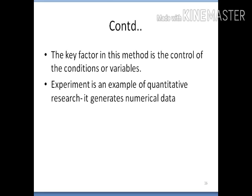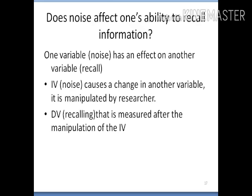By controlling conditions, we can eliminate irrelevant variables. Experiments generate numerical data (quantitative research). For example, if we study whether noise affects one's ability to recall information, noise is the independent variable (manipulated by the researcher) and recall is the dependent variable (measured after manipulation). Similarly, if we study the effect of intelligence on academic achievement, intelligence is the independent variable and academic achievement is the dependent variable.